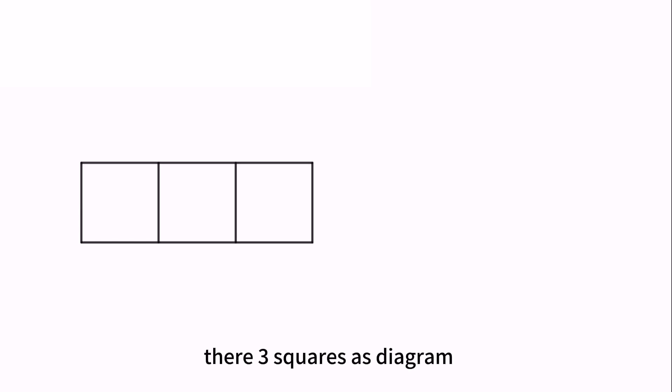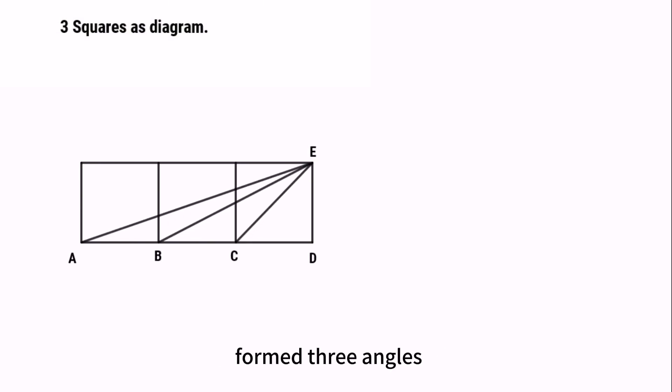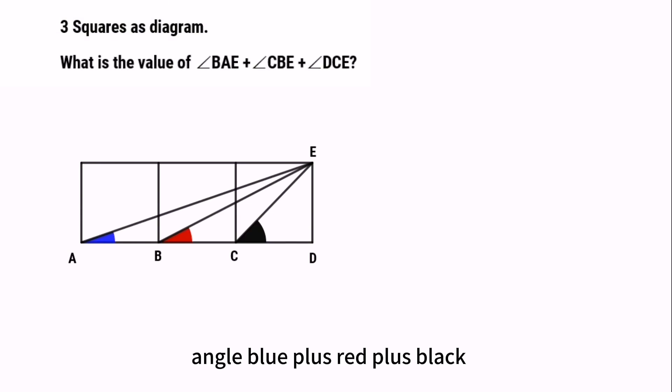There are three squares as shown in the diagram, with labeled points A, B, C, D, E. From the three angles, what is the total value of angle blue plus red plus black?